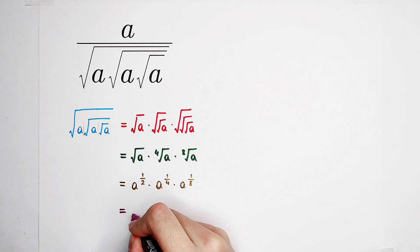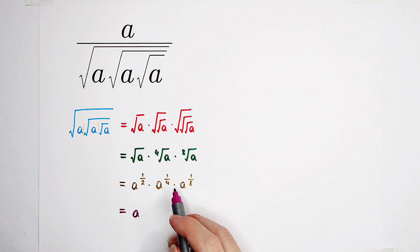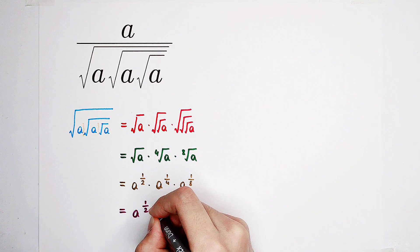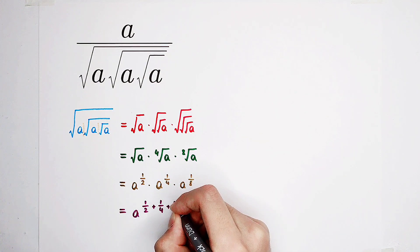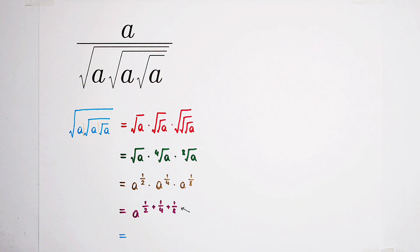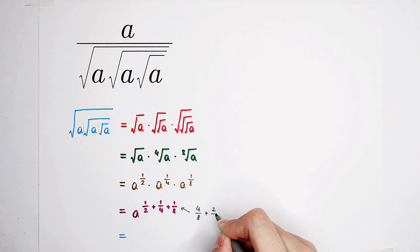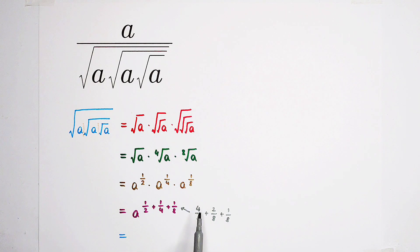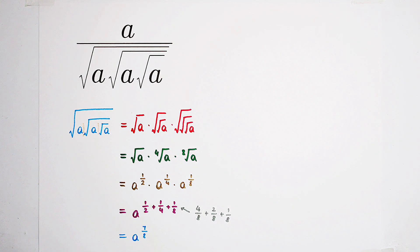And the denominator is a to the power of the sum of the exponents: 1 over 2 plus 1 over 4 plus 1 over 8. Our exponent is 4 over 8 plus 2 over 8 plus 1 over 8, so it is 7 over 8. And here it is a to the power of 7 over 8. This is our denominator — we've simplified the denominator.